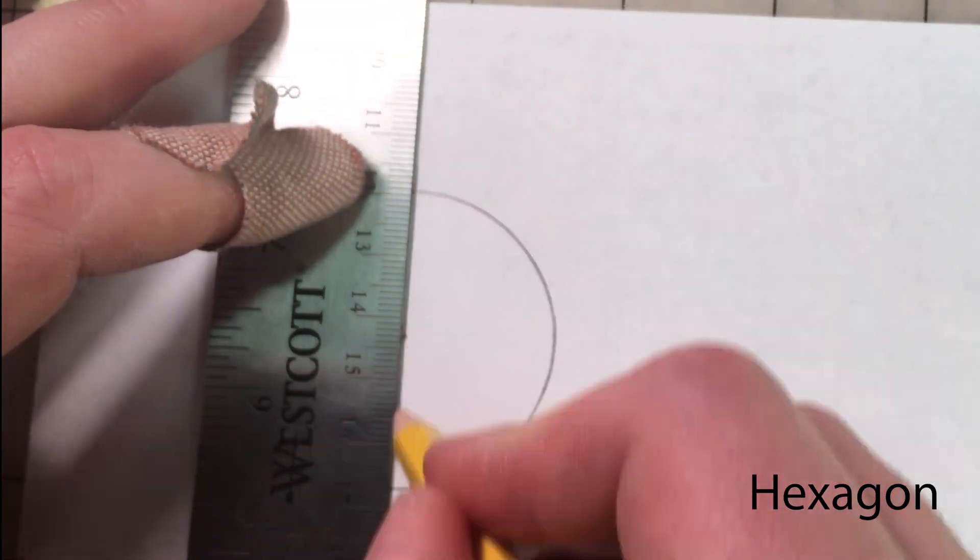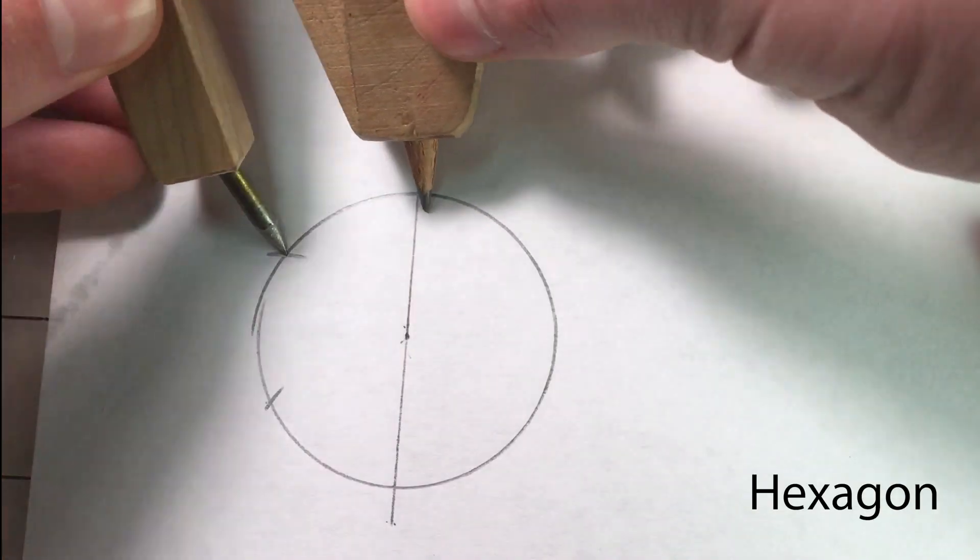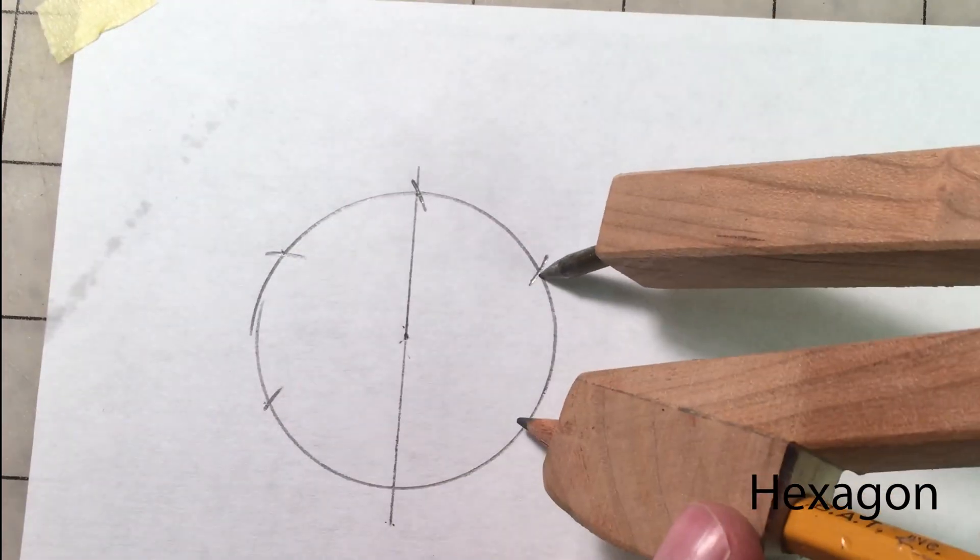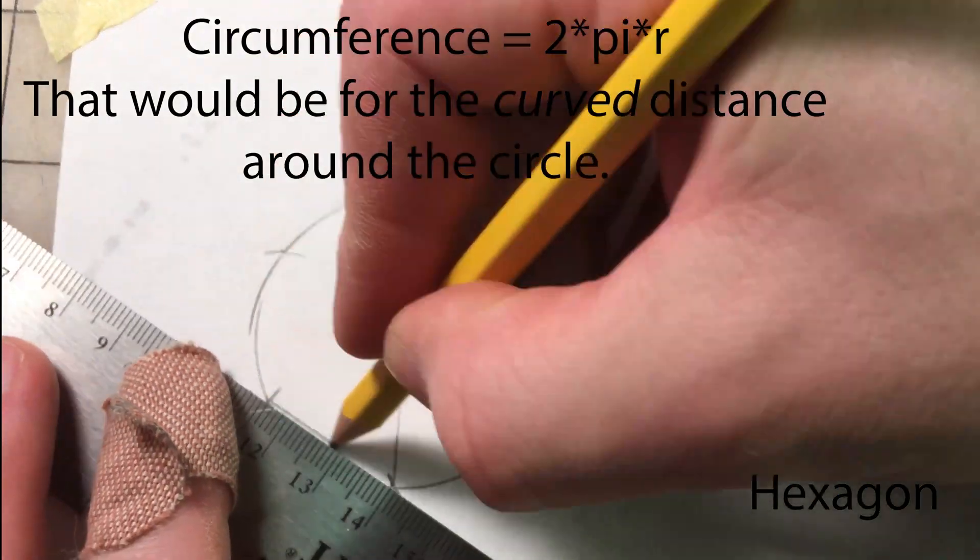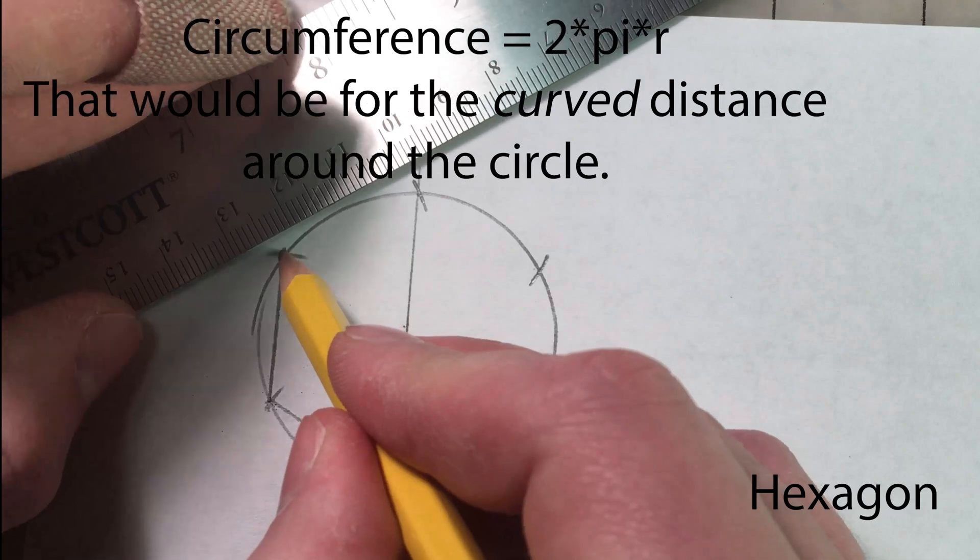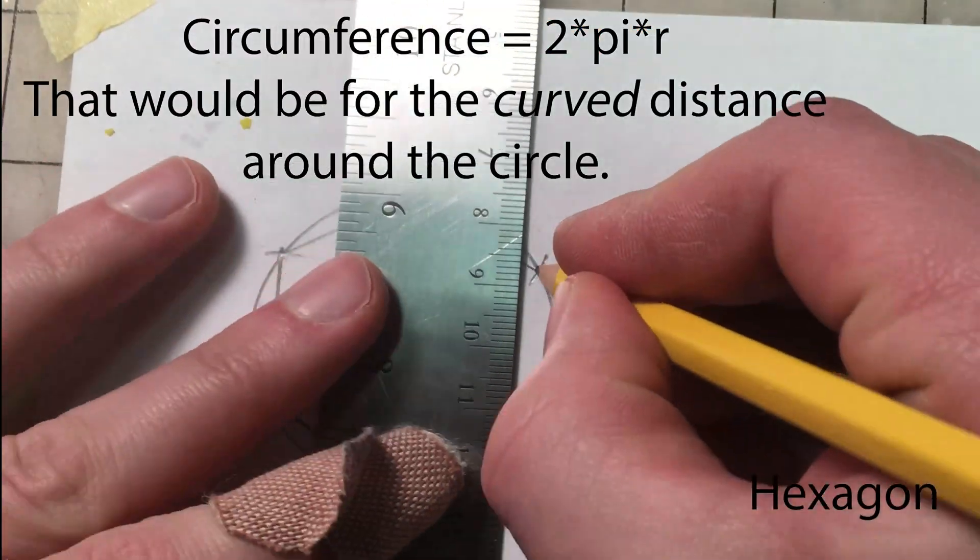With the compass set to the circle's radius, you can start at any point and mark off the radii around the circle and then connect the points. Note that even though we go around the circle six times, it doesn't mean that the circumference of the circle is six times the radius. We're actually using the fact that each side of a hexagon is equal to the distance from its center to any corner.